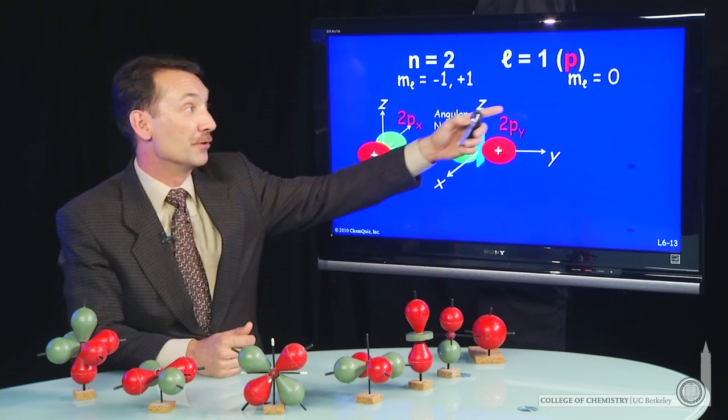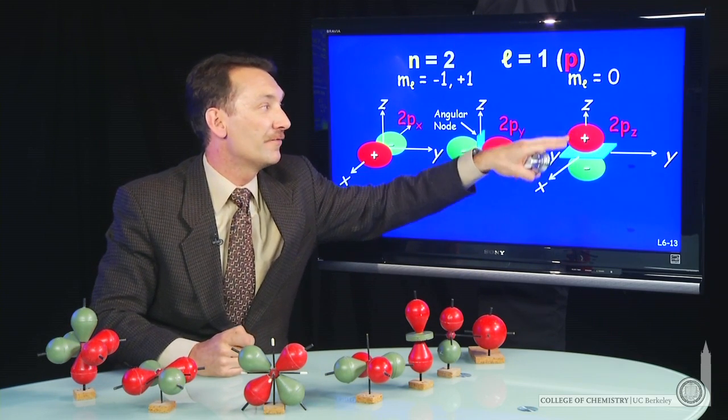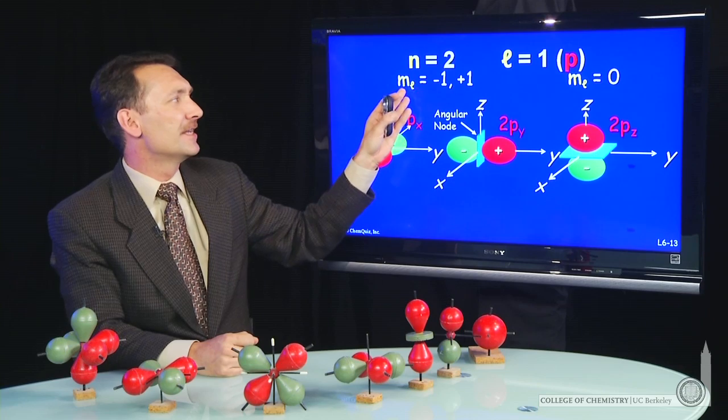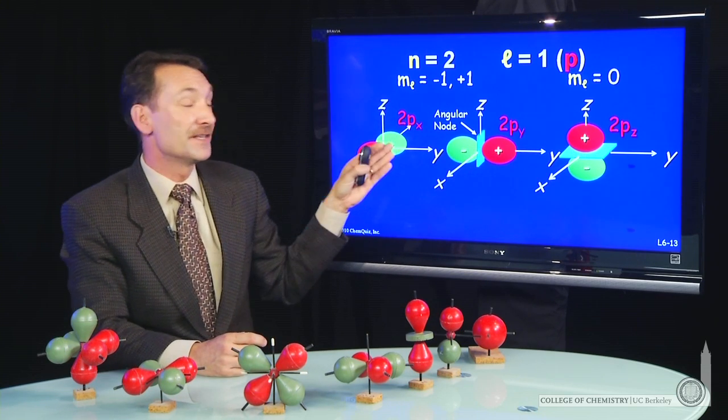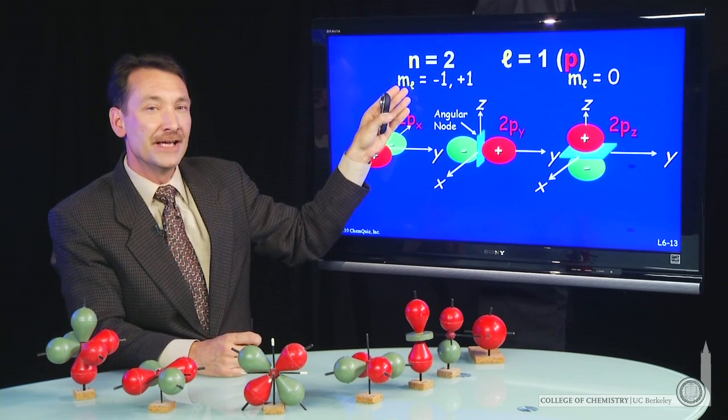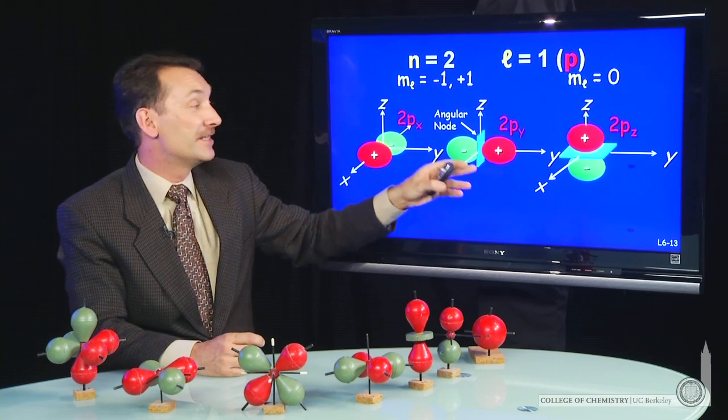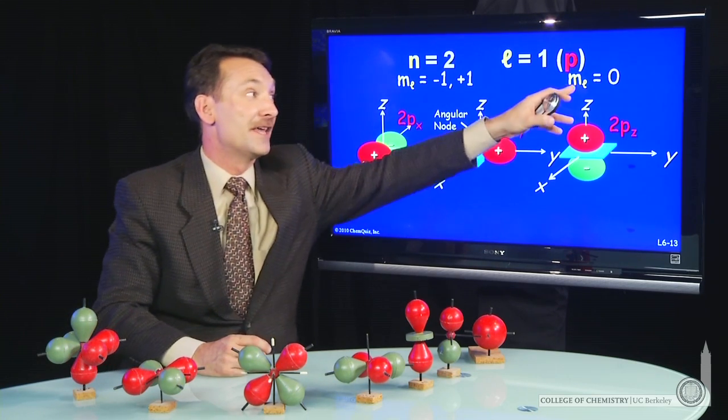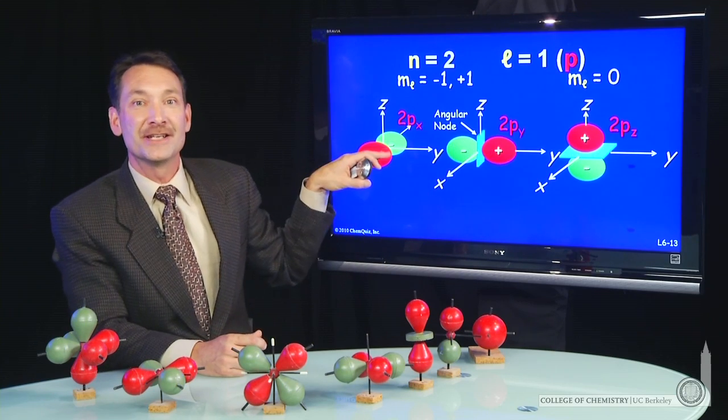Now there's one other value of m sub l equals 0, and that will give you the pz orbital, where the square of the wave function has its maximum along the z-axis. So the reason I've separated them like this, m sub l plus 1 minus 1 and m sub l equals 0, is we can choose various ways to describe the wave functions. And the way we choose for p is rather than use m sub l plus and minus and 0, we use a combination of the plus and minus ones to give us orbitals that neatly lie along the x and the y-axis. And the m sub l equals 0 already neatly lies along the z-axis.